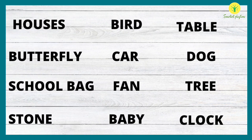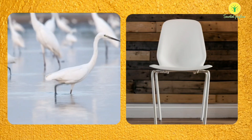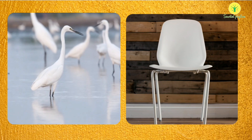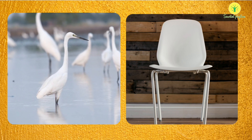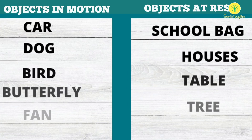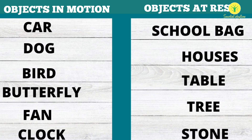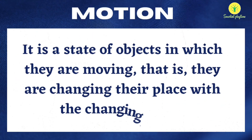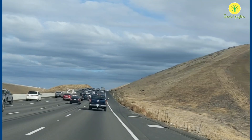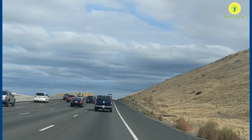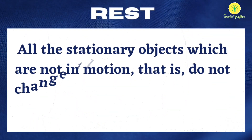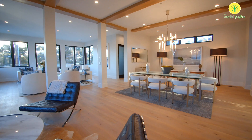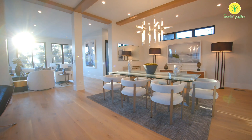You'll find that there is a difference in these objects in terms of their movement. For example, a bird or butterfly can move from one place to another, while a chair or table stays at the same place. So we can divide all these objects into two categories: objects in motion and objects at rest. An object is said to be moving if there is a change in its position with changing time — for example, walking or driving a car. If an object is fixed at a particular position and there is no change in its place with respect to time, then it is said to be at rest — for example, chair, table, and walls are at rest.